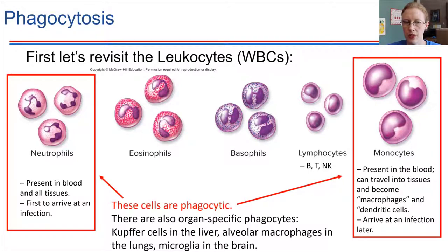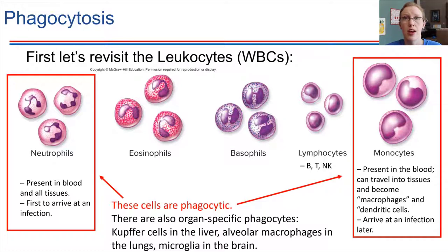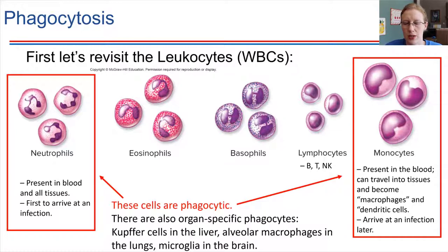One other type of cell that is important in the immune system but is not on this slide — I just want to mention it now to introduce you to it — the mast cells. Mast cells are very important in immune responses and are quite similar to basophils. They have granules inside with contents somewhat similar to what's in basophils. Mast cells are also important in the inflammatory response, and we're going to see them later on in this chapter.